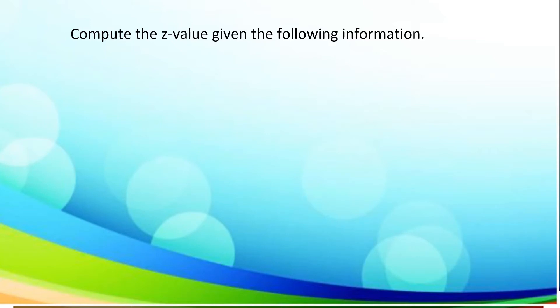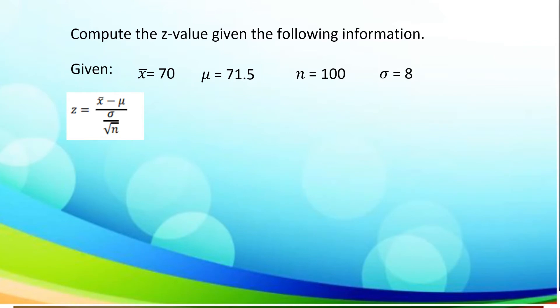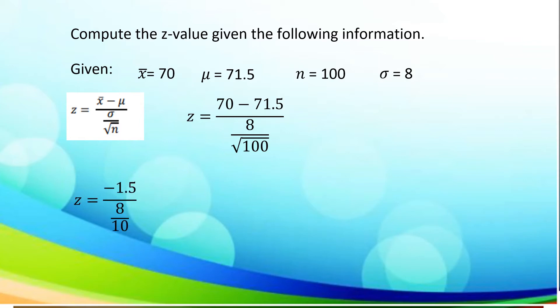Now let us compute the Z value given the following information. The given: x-bar is 70, mu is 71.5, n is equal to 100, and sigma is equal to 8. Utilizing the formula, we substitute: 70 minus 71.5 divided by 8 over the square root of 100. 70 minus 71.5 is negative 1.5, and the square root of 100 is 10. 8 divided by 10 is 0.8. Dividing negative 1.5 by 0.8, we have negative 1.875.